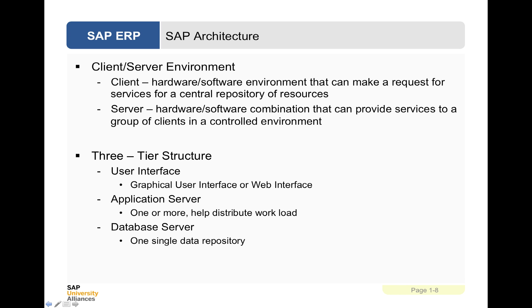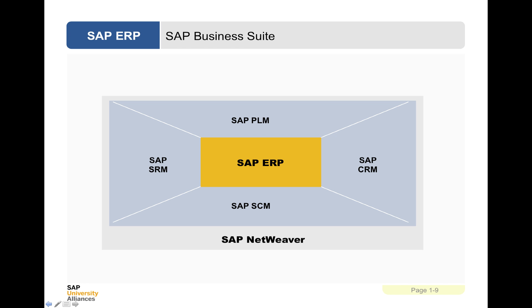SAP HANA, which is their latest database, actually has the application server built into the database, so you just need a web interface and the database to run an ERP system or develop applications. Within SAP Business Suite there are other modules: Customer Relationship Management, Product Lifecycle Management, Supplier Relationship Management, and Supply Chain Management — all of which contribute to the SAP Business Suite used at the largest company level. All those services are delivered via SAP NetWeaver, which is a Java enterprise environment-based platform.